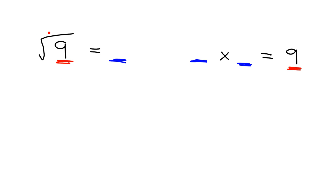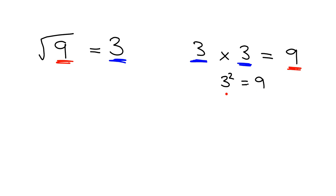If you're asked to calculate the square root of 9, that's the same question as asking you what, multiplied by itself, will give you 9 as an answer. Hopefully you immediately know that 3 times 3 gives you 9, and so the square root of 9 is just 3. You can write 3 times 3 as 3 squared — this is why squaring and square rooting are opposites. If you know 3 squared is equal to 9, you immediately know that the square root of 9 is equal to 3.